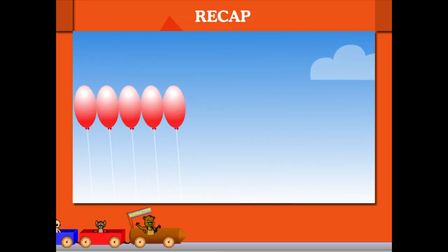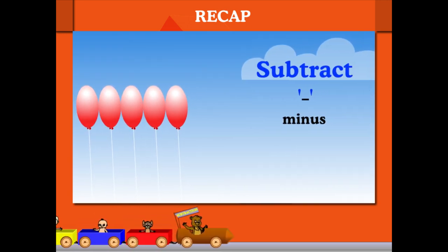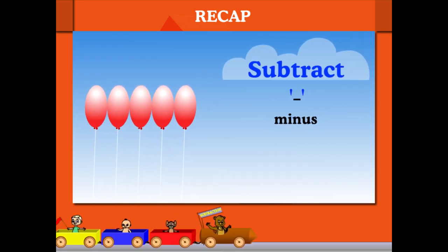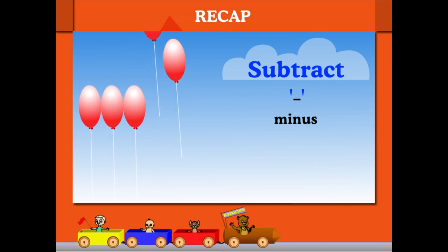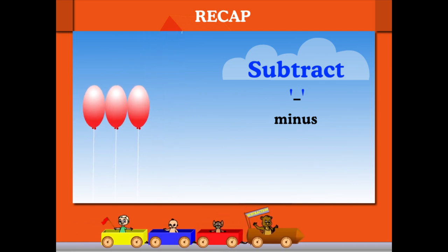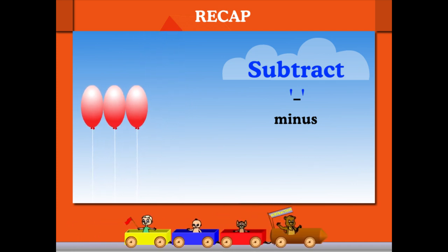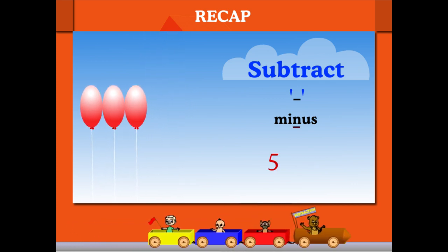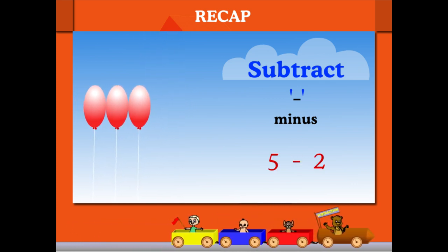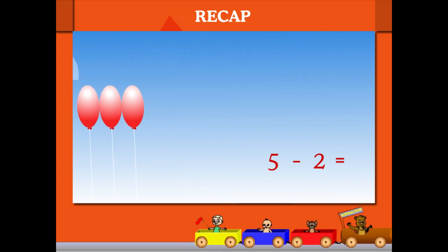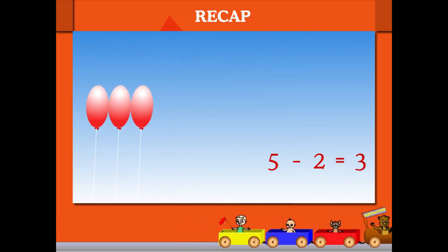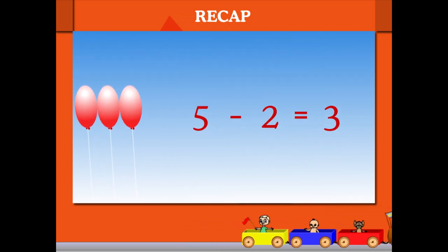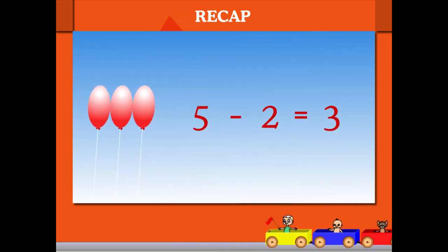Here are 5 balloons. Let's learn to subtract with the minus sign. If 2 balloons flew away, how many left? It is 5 minus 2 equal to 3. That's it.